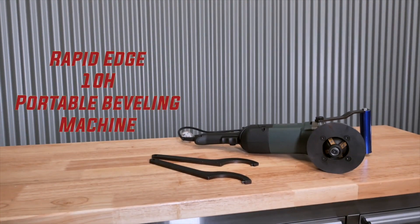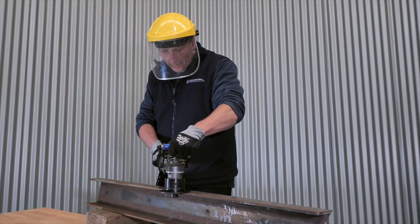Cameron here from Capital Machinery with the Rapid Edge 10H portable handheld beveling machine. A great lightweight machine for on-site or portable workshop use.